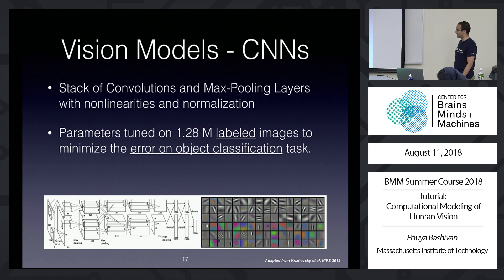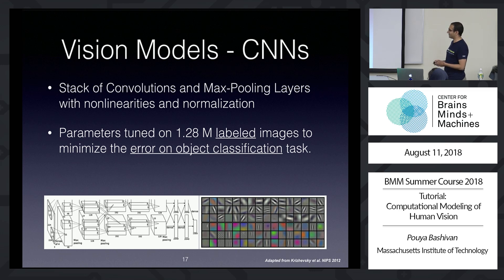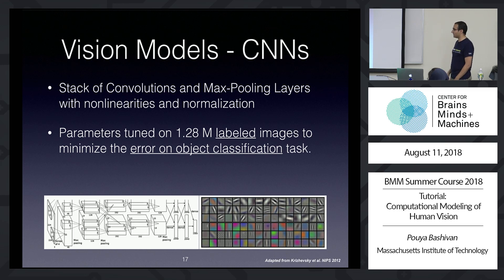One example of these models — maybe the first one that actually worked on a big problem in computer vision — was a model called AlexNet, proposed by Krizhevsky and Jeff Hinton. This model was made out of a stack of convolutions and pooling layers plus non-linearities and normalization. The parameters were optimized on a dataset of 1.3 million labeled images for the task of reducing object classification error. What was shown was that the feature detectors in the first layer were very similar to what people had in mind for what V1, maybe V2, cells are doing in the brain.